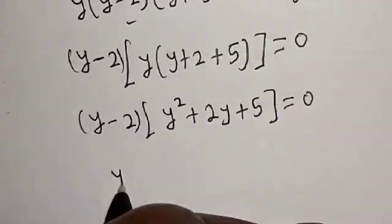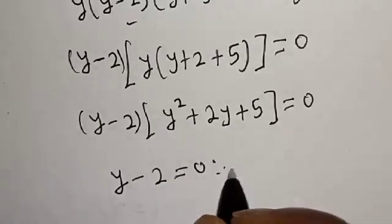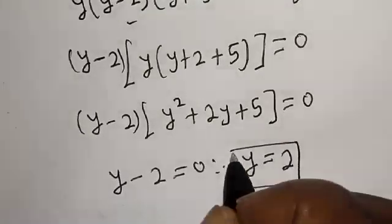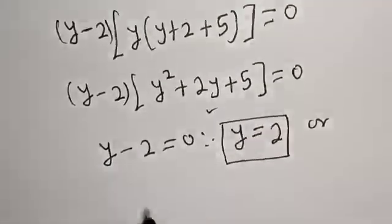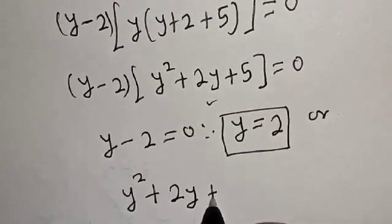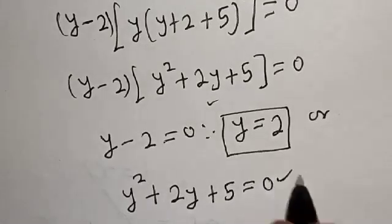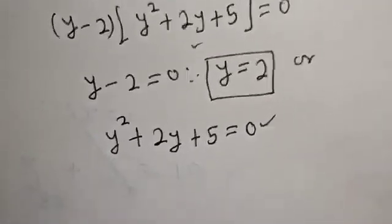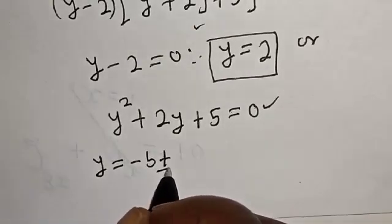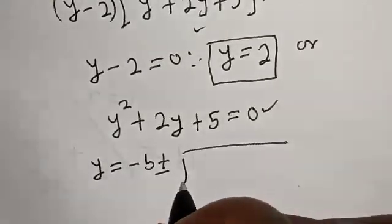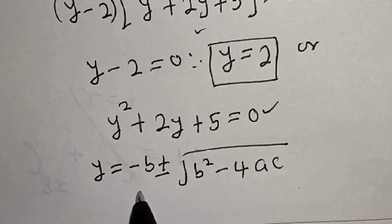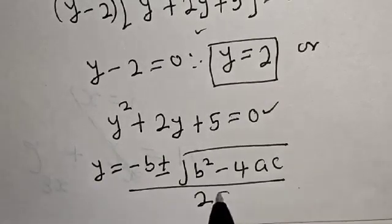Now, y minus 2 is common. Factoring it out: y minus 2, multiplied by y squared plus 2y plus 5, equals 0. There are two cases. Case one: y minus 2 equals 0, therefore y equals 2. Case two: y squared plus 2y plus 5 equals 0. This is a quadratic equation. Let's solve using the quadratic formula: y equals minus b plus or minus square root of b squared minus 4ac, over 2a.